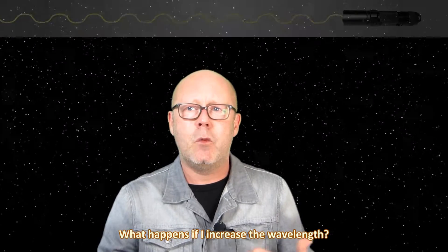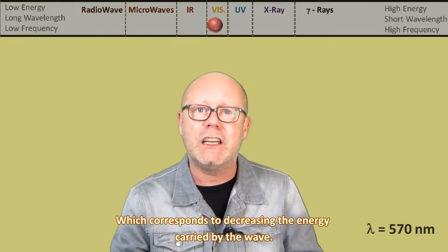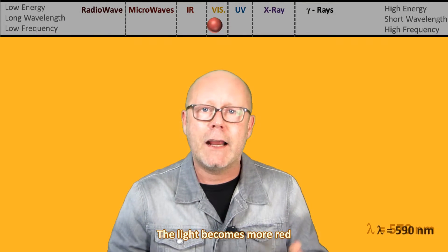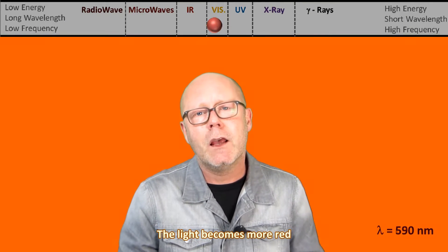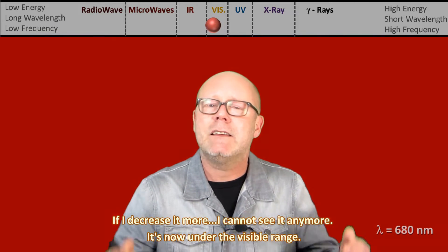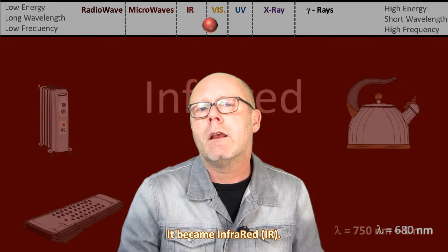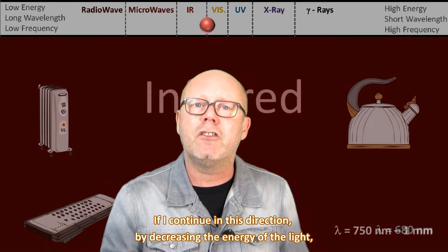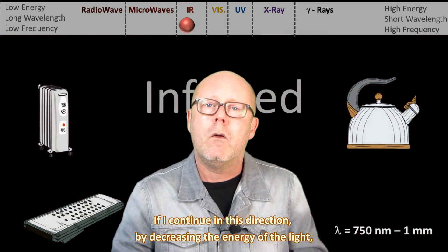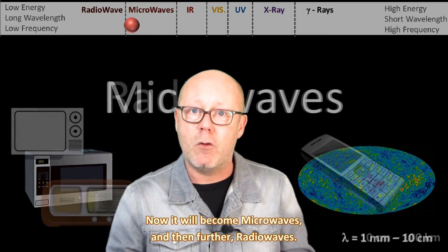Let's explore that. What happens if I increase the wavelength, which corresponds to decreasing the energy carried by the wave? The light becomes more red. If I decrease it more, I cannot see it anymore — it's under the visible range, it became infrared. If I continue in this direction by decreasing the energy of the light, it will become microwaves, and then further, radio waves.